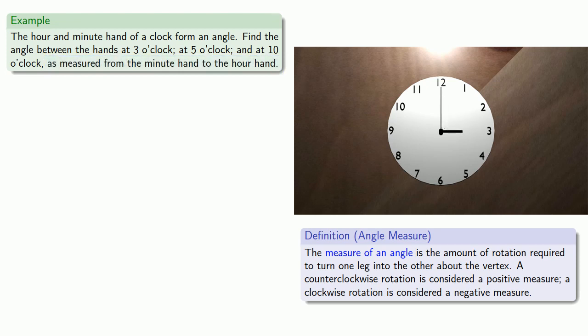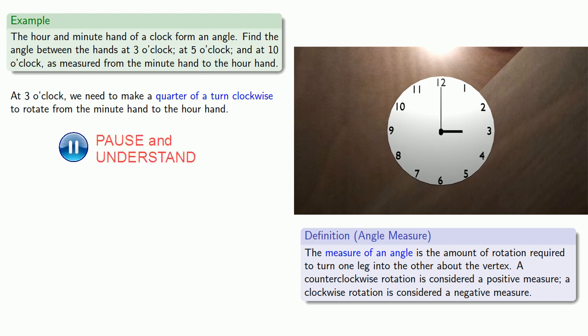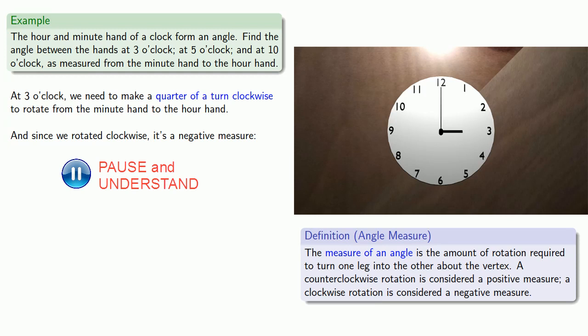So if we do that rotation, we see that at three o'clock, we need to make a quarter turn clockwise to rotate from the minute hand to the hour hand. And since we rotate it clockwise, it's a negative measure. This means that the angle is minus one quarter turn.